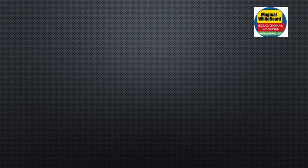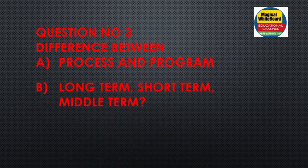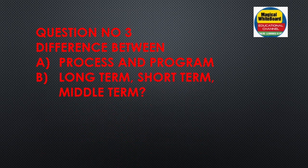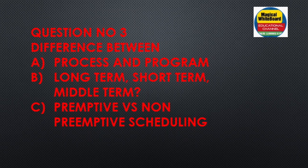Question number three covers differences: process versus program is the first difference. Second, long-term, short-term, and medium-term schedulers — what is a scheduler and what are the different types? Also, preemptive versus non-preemptive scheduling and their differences.